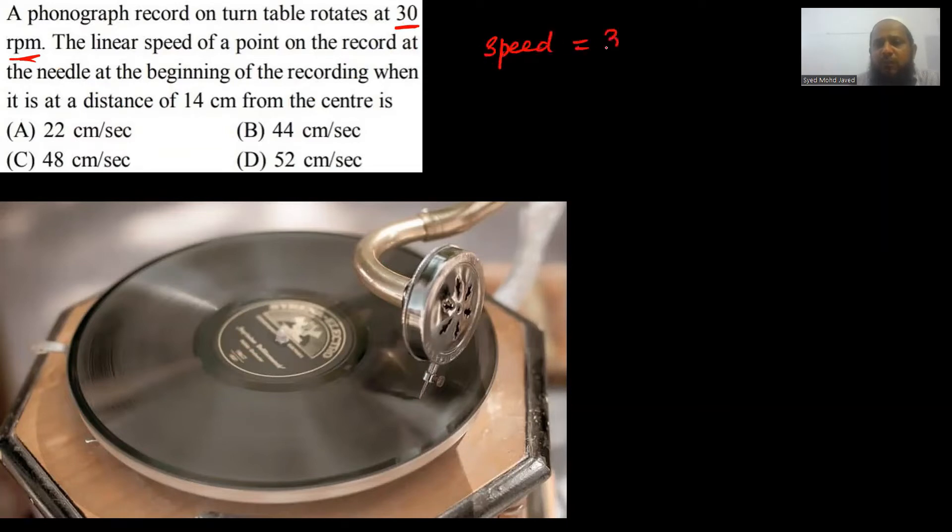Speed is equal to 30 rotation per minute. If we can do this, 30 upon 60 rotation per second. One minute is 60 seconds. Basically, it's half rotation per second.